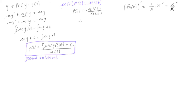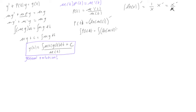Here we have mu prime over mu, just like x prime over x. So p(t) is also equal to the derivative of ln(mu(t)). Now let's take the integral of both sides: the integral of p(t) dt equals the integral of the derivative of ln(mu(t)). The derivative sign and the integral sign cancel, so we get the integral of p(t) dt equals ln of mu(t).